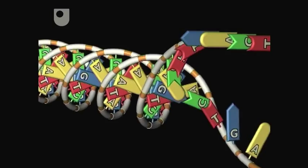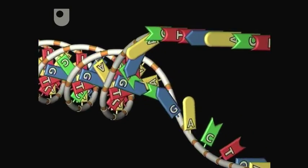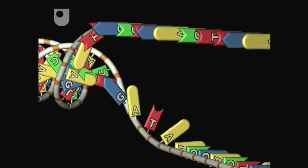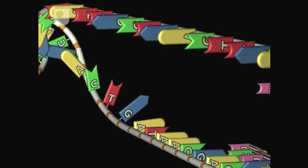When transcription starts, a small section of DNA is unwound. One of the two unwound strands acts as a template for making the message.